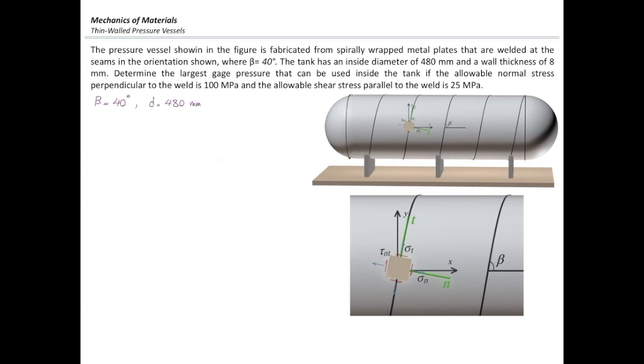Beta is 40. Internal diameter is 480mm. Radius half of that. Wall thickness 8. And normal stress perpendicular to the seam weld should be limited to 100 MPa. And shear stress is limited to 25 MPa. Now we want to determine stresses in the original plane in the x and y direction.